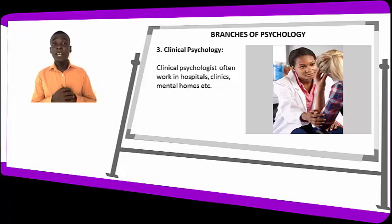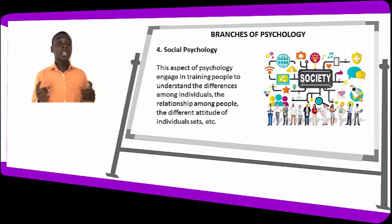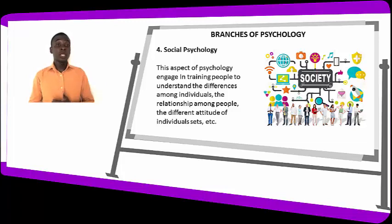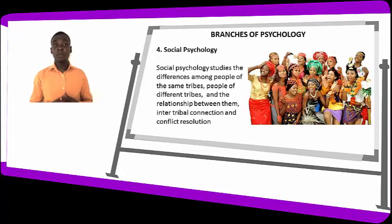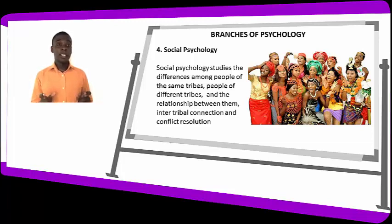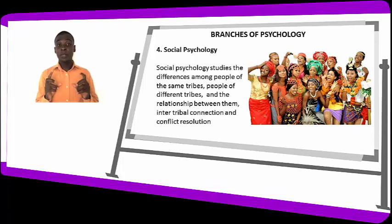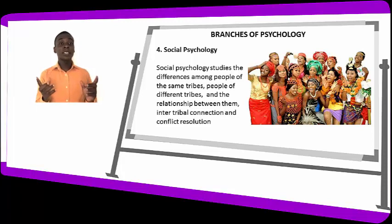Social psychology is an aspect of psychology which engages in training people to understand their differences — differences among individuals, among groups, among people of the same culture, and people of different cultures. Social psychology studies the differences among people of the same tribe and different tribes, their relationships, inter-tribal connections, and conflict resolution — helping people relate better and understand each other.